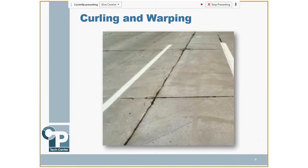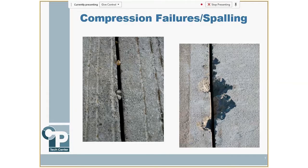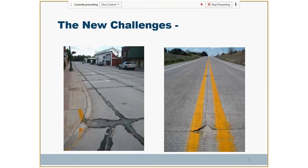Compression failures and spalling are another issue — if you get on a joint or pavement too soon, before it's really time to saw, you can get some spalling that becomes a maintenance headache. Also, if you get incompressibles in the joints — one of the reasons many states still seal their joints is to keep those out so that as the pavement expands, you don't get point bearing and start to break the pavement. In the last 15 or 20 years we've really been focused on what we call a new durability-type joint deterioration that we've scratched our heads about for a number of years.